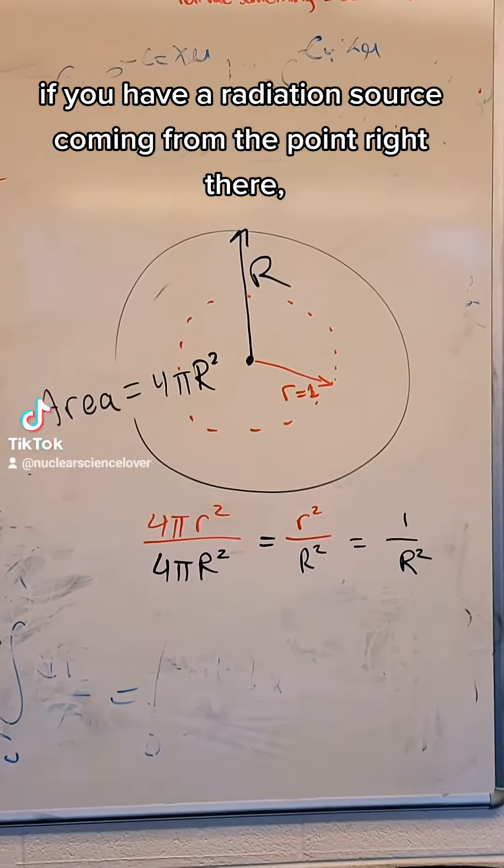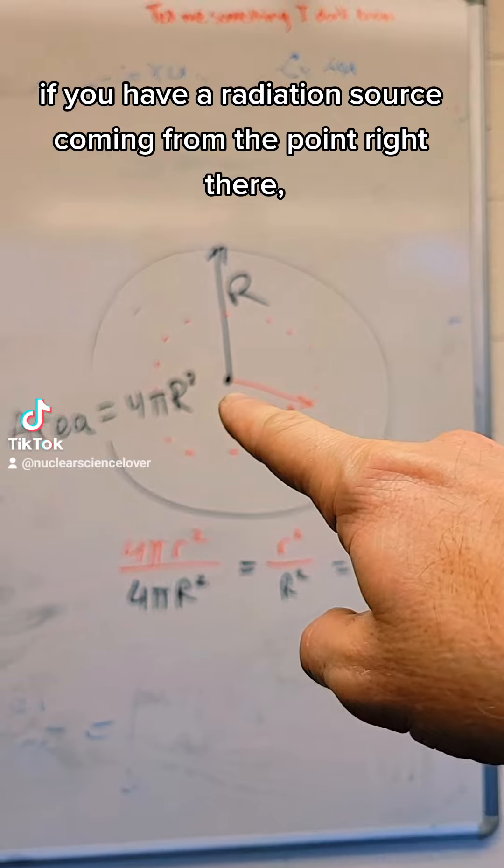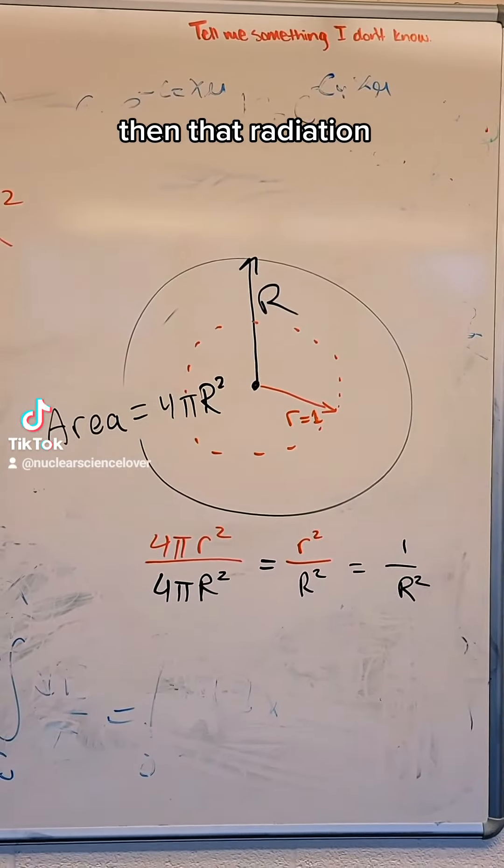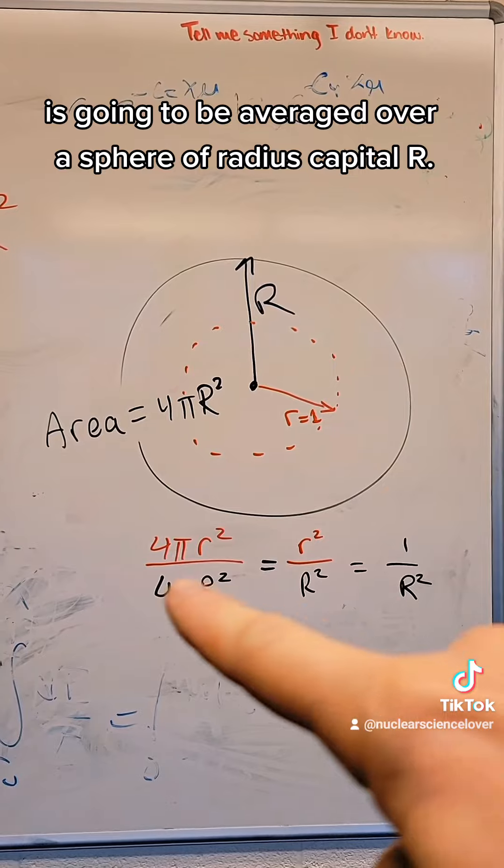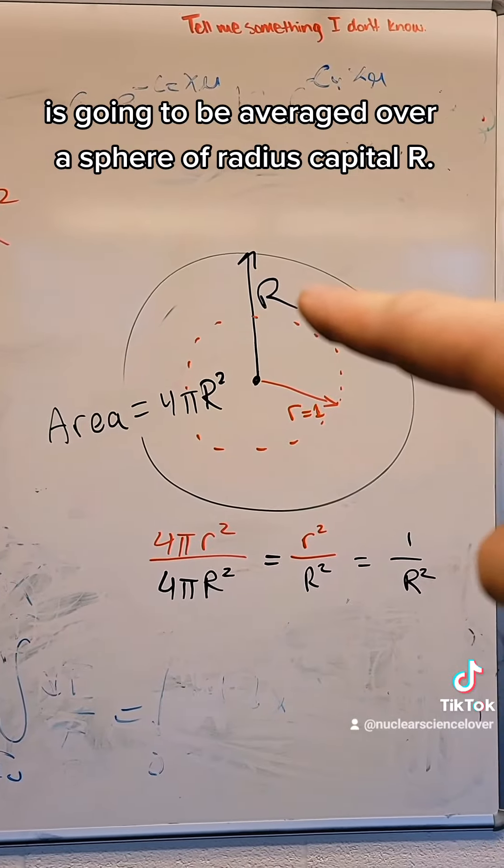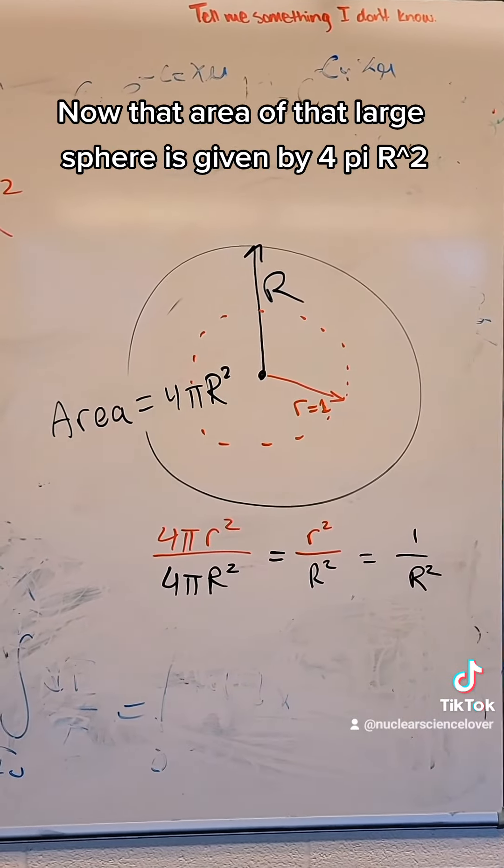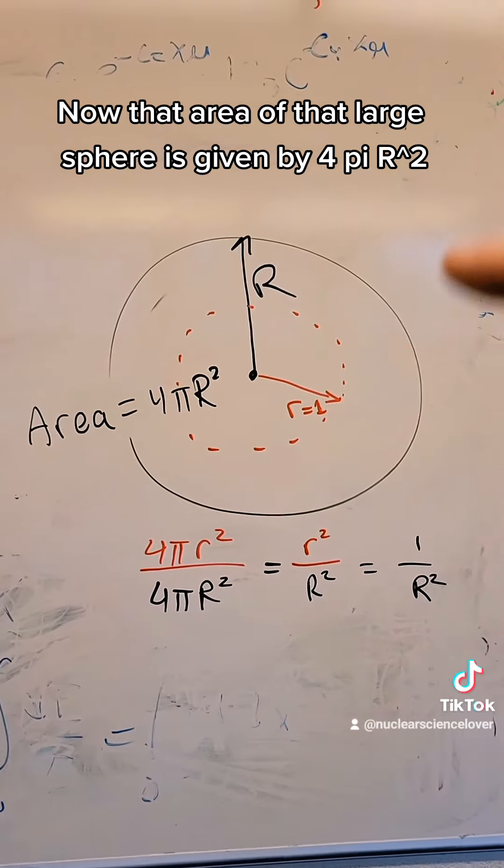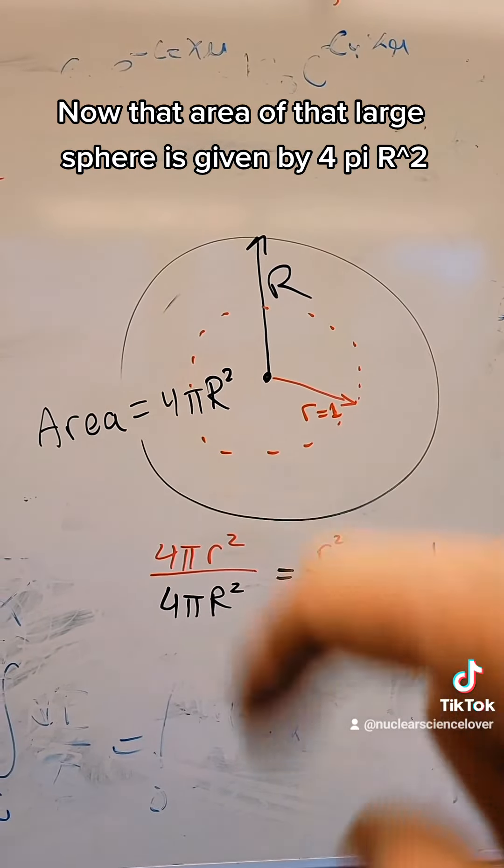If you have a radiation source coming from the point right there, then that radiation, if it's uniformly distributed, is going to be averaged over a sphere of radius capital R. Now, that area of that large sphere is given by 4πR².